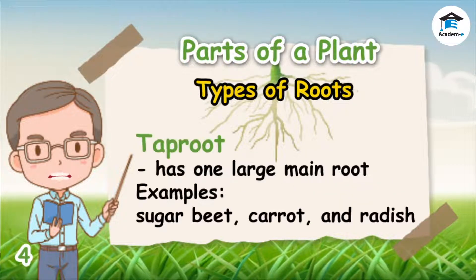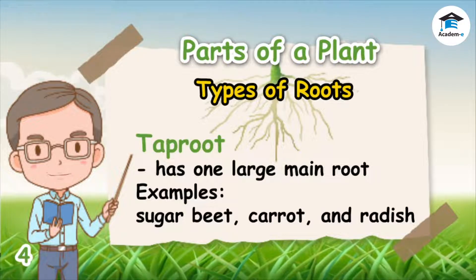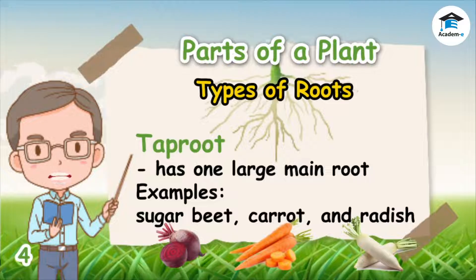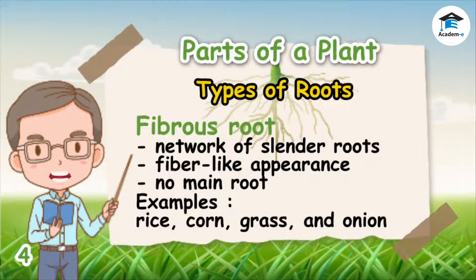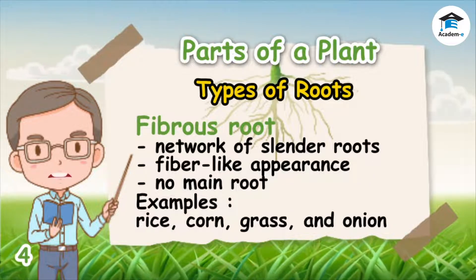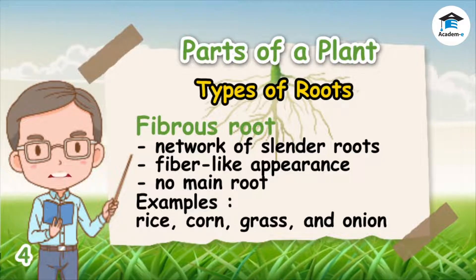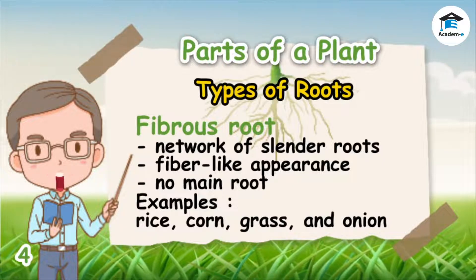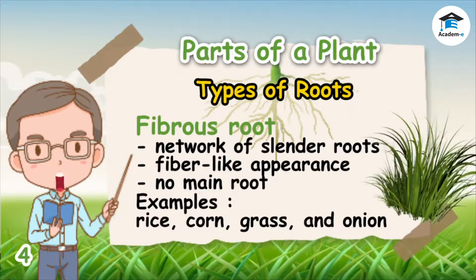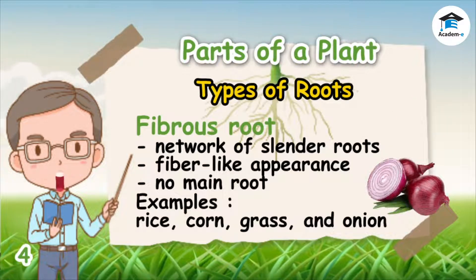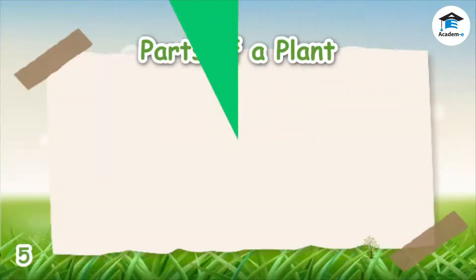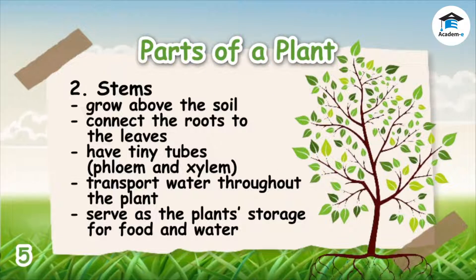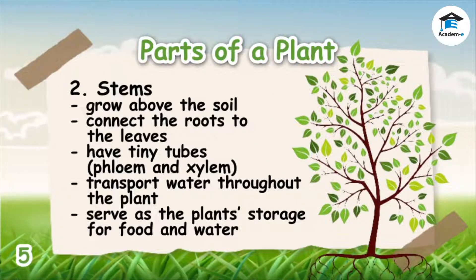There are two types of roots: tap roots and fibrous roots. A taproot has one large main root with smaller roots branching out. Sugar beet, carrot, and radish are examples of tap roots. The fibrous root is a network of slender roots, hence its fiber-like appearance — it has no main root. Rice, corn, grass, and onion have fibrous roots.